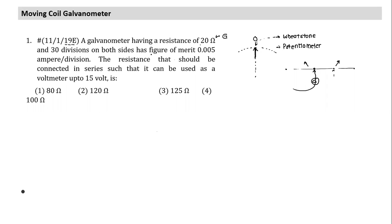The question introduces the term 'figure of merit.' The unit gives an indication: it is 0.005 ampere per division. This means per division the current is 0.005 ampere. Though figure of merit is an unfamiliar term, its unit tells us exactly what it means — it is current per division, the inverse of sensitivity.